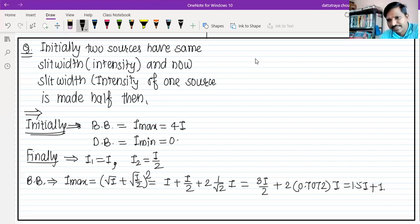This gives 1.5I plus 1.4I, approximately 2.9I. So from 4I it became 2.9I.